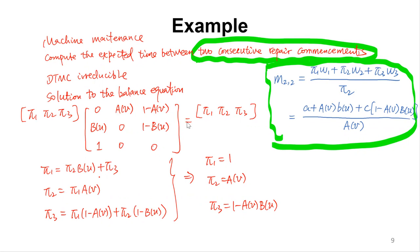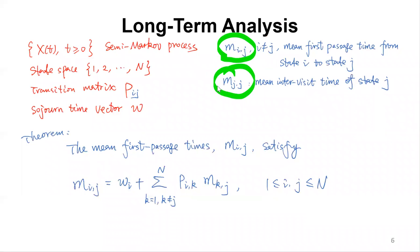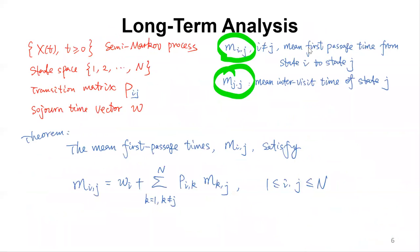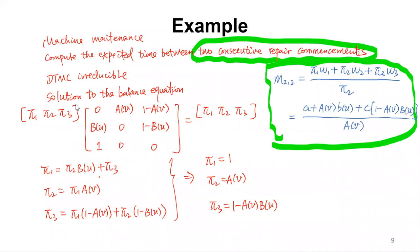Now for the machine maintenance problem: compute the expected time between two consecutive repair commencements. Repair commencement corresponds to state 2, so we need m22. We have the transition probability matrix and w values defining the semi-Markov process. Solving the balance equation gives π1, π2, π3. Then m22 = (π1*w1 + π2*w2 + π3*w3) / π2. This is the expected time between two consecutive repair commencements.